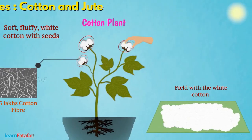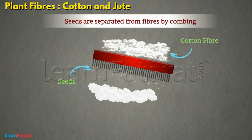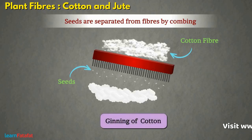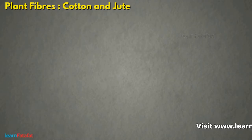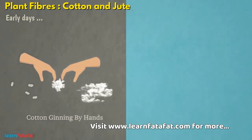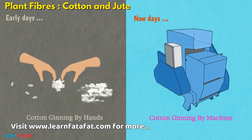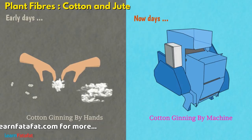Cotton is picked from the balls by hand. The seeds are separated from fibers by combing. This process is called ginning of the cotton. Previously, ginning was done by hand. However, these days, well-developed machines make the work easy. This is how we get cotton fiber.